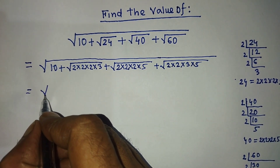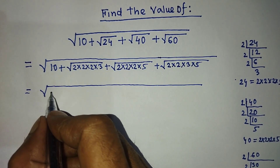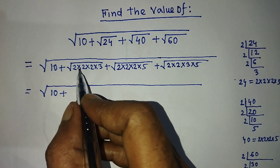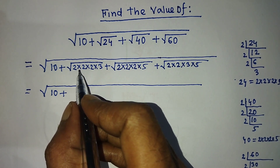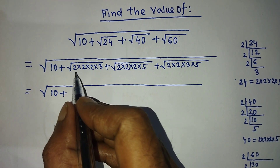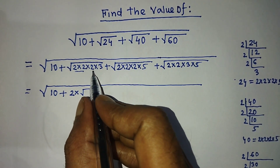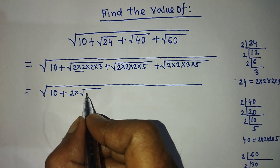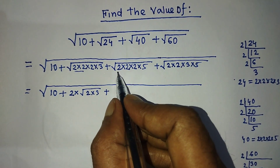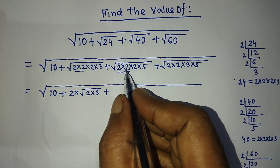Again we write the square root, and inside this square root we write 10 plus. To find the square root of 24: there is one pair of 2 present, so we take a single 2 from this pair outside the root. The remaining 2 and 3 are unpaired, so we write 2 × √(2 × 3) — that is, 2√6.